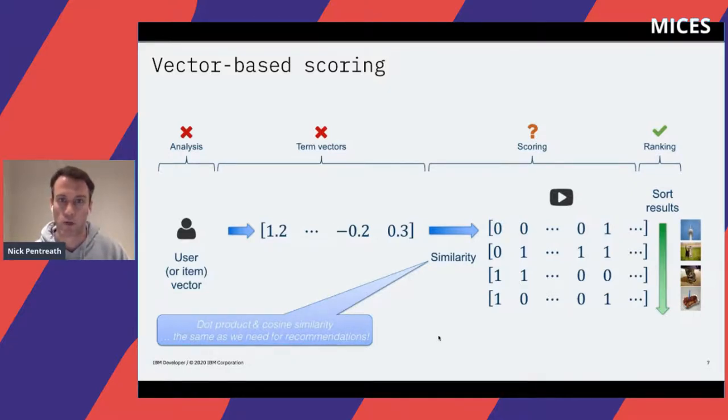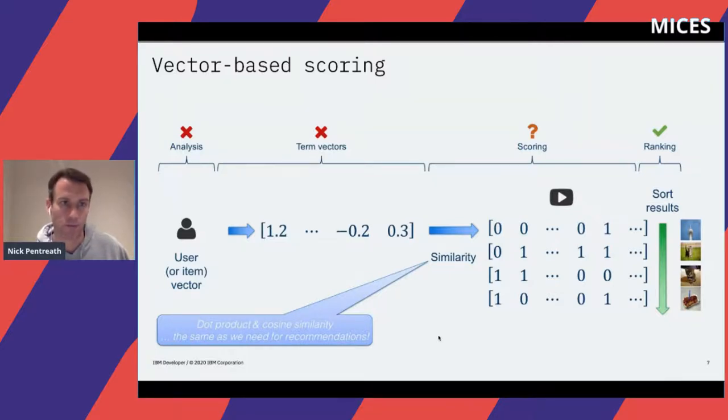The dot product and cosine similarity machinery is quite similar to what we use in search ranking. Scoring and ranking work, but the term vectors don't necessarily work because the way that arrays and vectors are stored in Elasticsearch natively up until now has meant that the array gets stored as an unordered set of numbers. We lose that ordering and the ability to do the operations we need on those vectors.